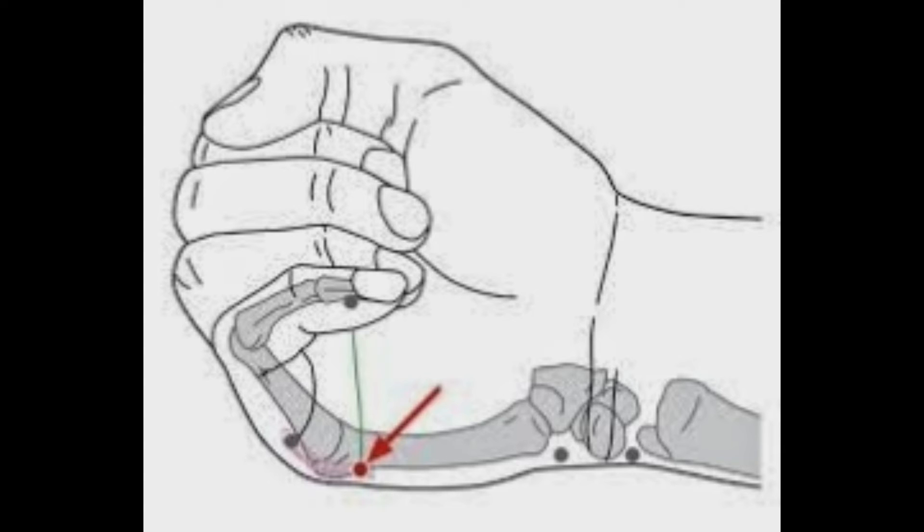The next point is Small Intestine 3, or Hou Xi, which is a Shu-stream point with many useful applications. It is an opening point for Du Mai, the Extraordinary Meridian or Governing Vessel. If the only thing you know is that the person you are treating has a deficiency of Yang energy, you won't do anything wrong by using this point to open and tonify the Yang of the whole energy matrix. I discussed this point in the video about extraordinary meridians — for more information you can check the video 'Small Intestine 3 Hou Xi and Du Mai Extraordinary Vessel' on our YouTube channel.